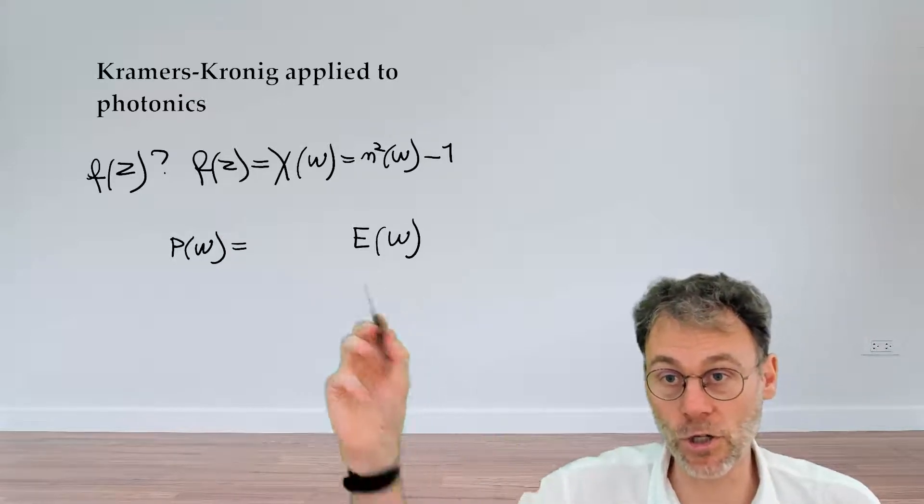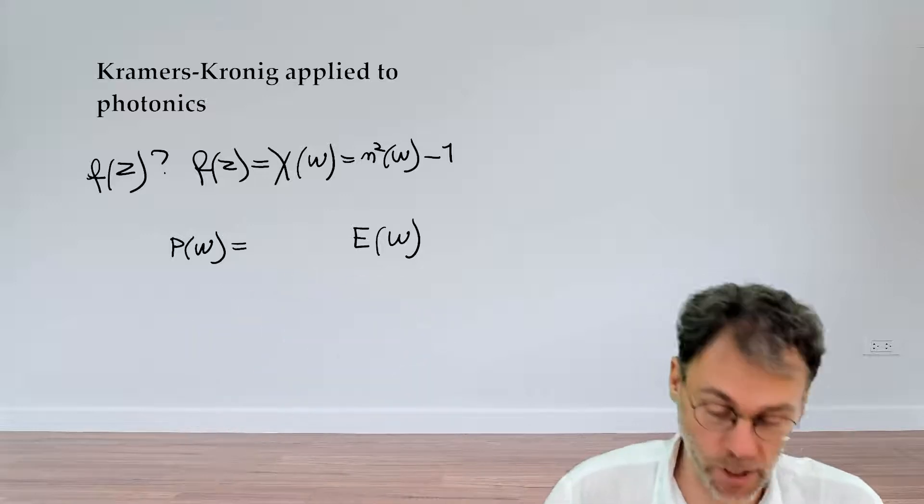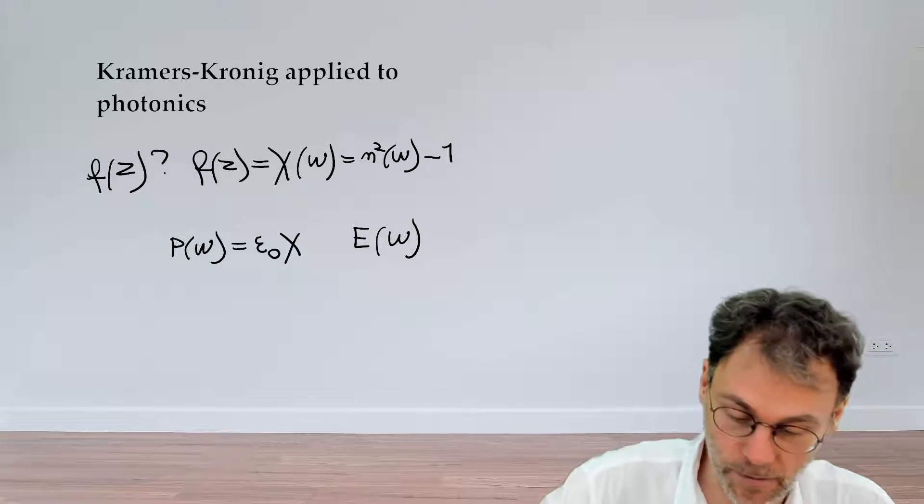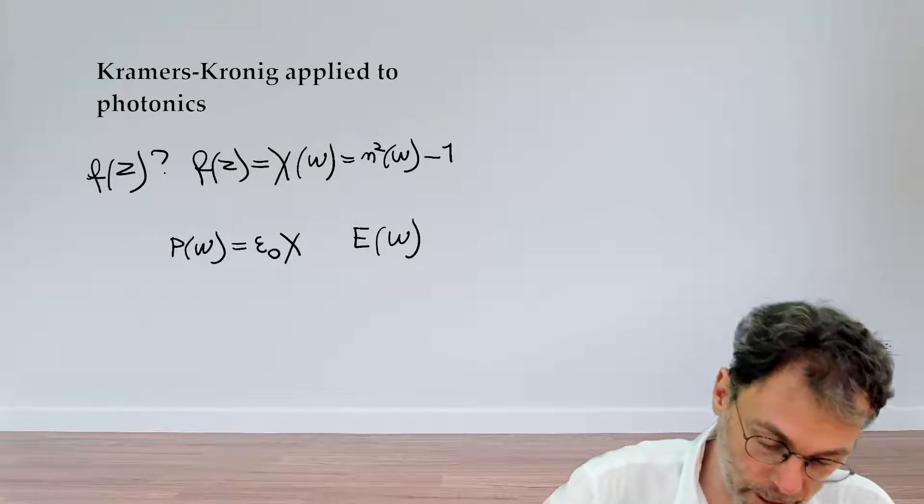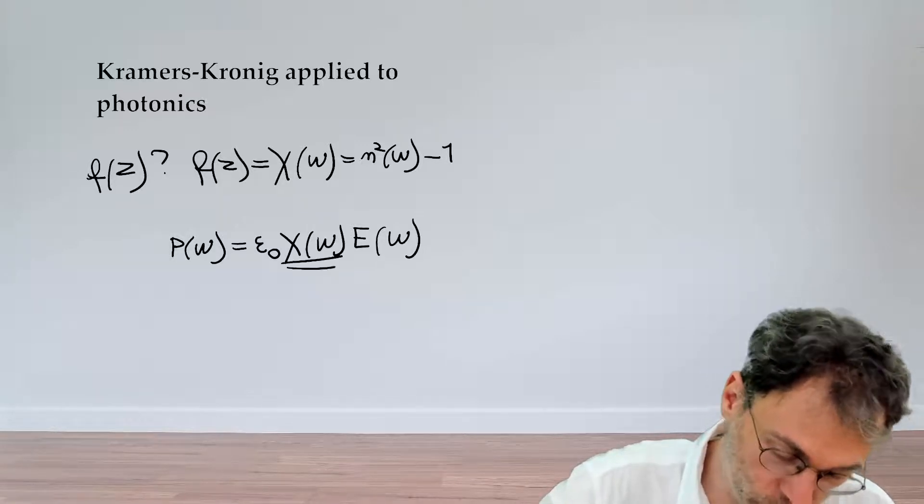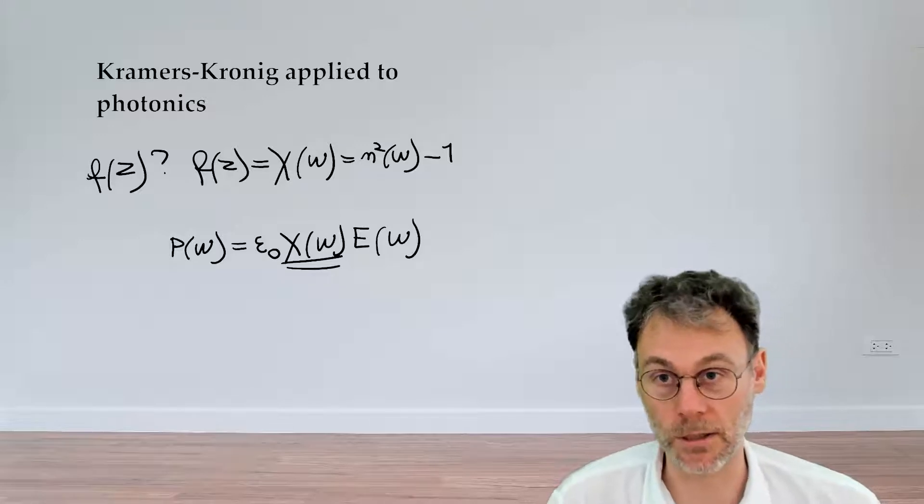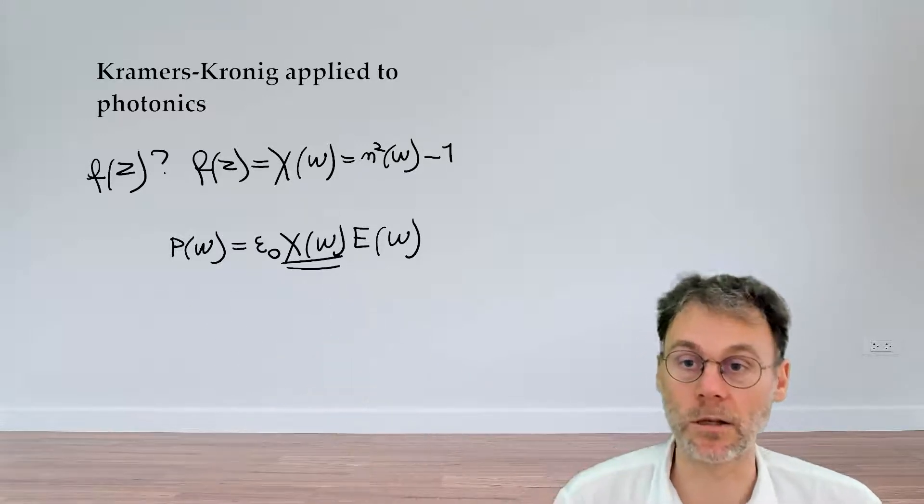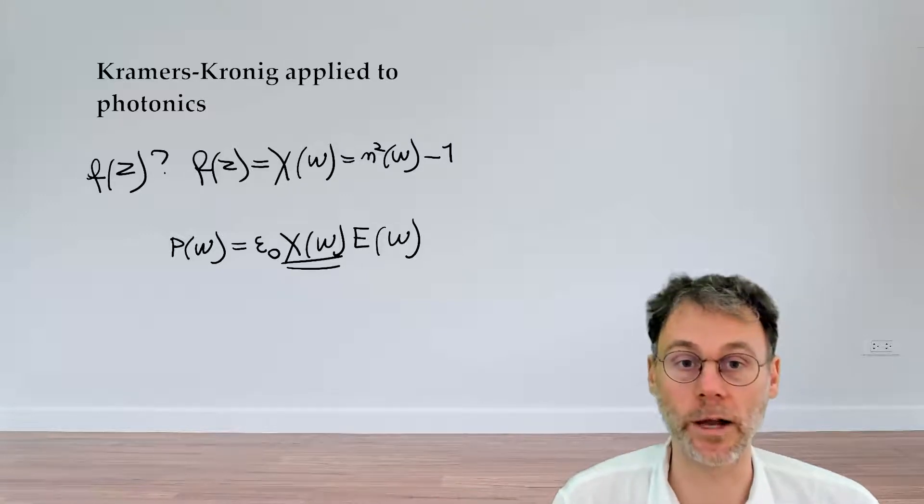The relationship between these two in the linear case is given by epsilon zero, the vacuum permittivity, times this chi of omega. So this is what the susceptibility means. It's the material response in terms of polarization when you excite it with an electric field.